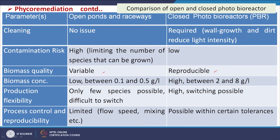Biomass concentration is low — 0.1 to 0.5 g/L — for open pond systems, but high — 2 to 8 g/L — for closed photobioreactors. Production flexibility is limited to few species in open ponds, but very high in closed systems. Process control and reproducibility is limited for open ponds and much better for closed photobioreactors.